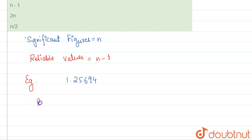the only reliable digits are 1.2569. Why is it so? That 4 is unreliable because it is possible that this would have been